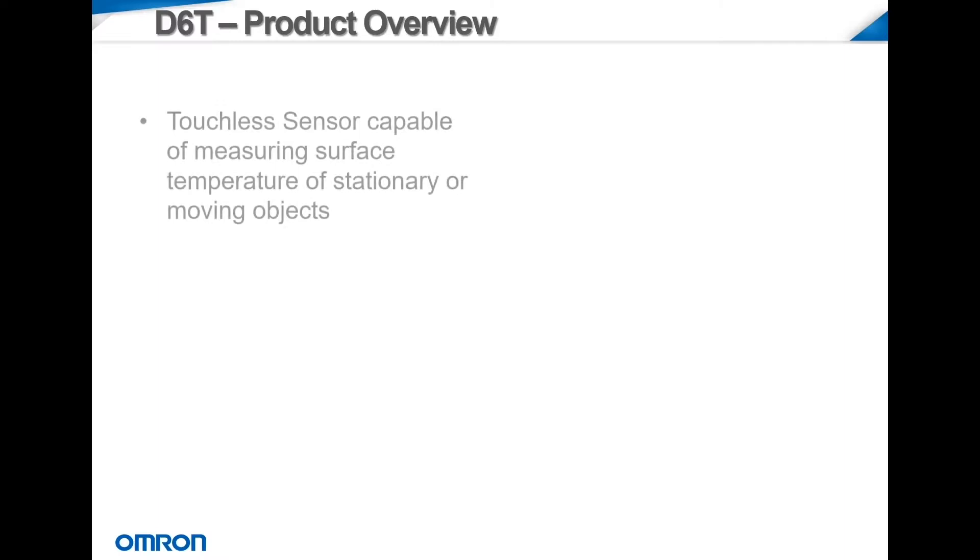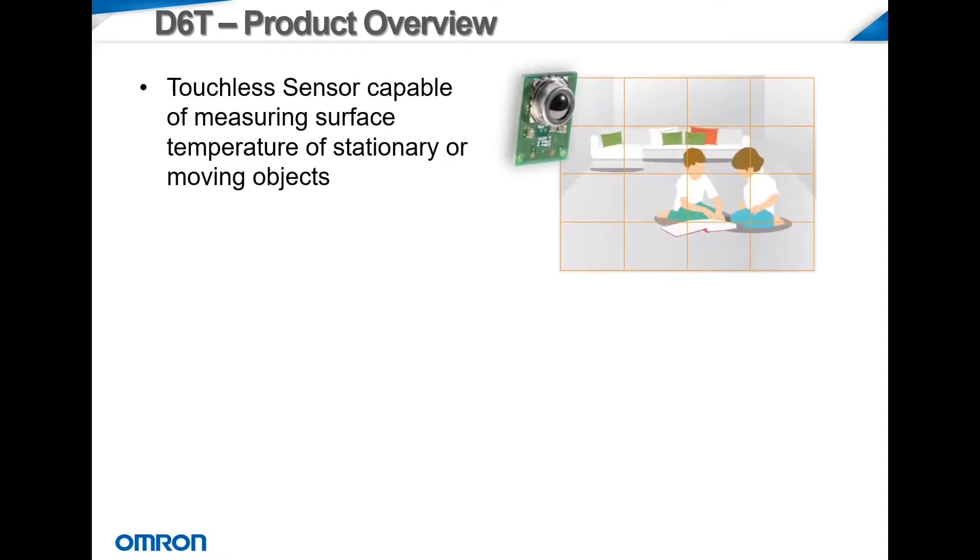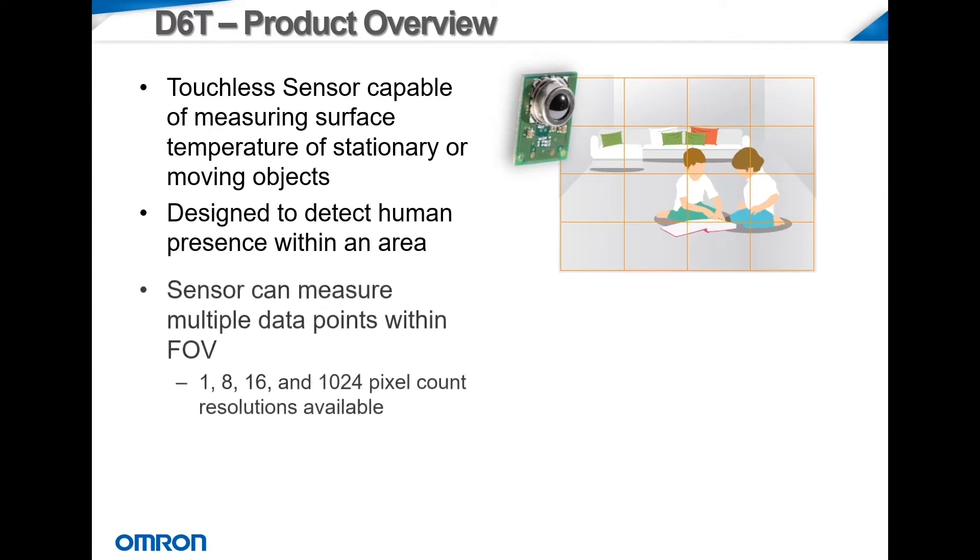The D6T sensor uses IR technology to read the surface temperature of both stationary and moving objects. With this ability, the sensor is able to detect human presence even when a person is not moving.